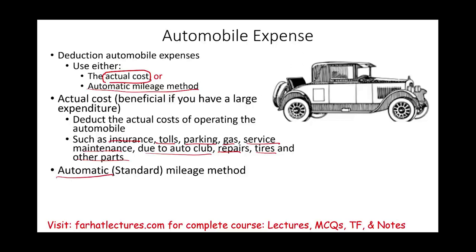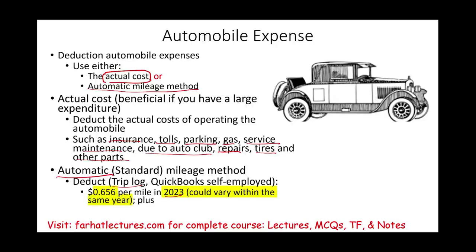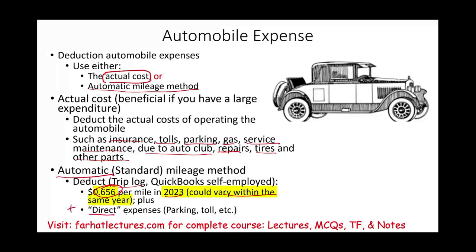Or you could use the automatic or standard mileage method. You can keep track of this using an app like Triplog or QuickBooks Self-Employed. For 2023, the mileage rate is $0.656 per mile. Bear in mind you could be listening to this in 2024 or 2027 — the rate will change, and it can even change within the same year. It's simply how many business miles you drove times the rate the IRS gives you. You would then add direct expenses to the automatic mileage method.